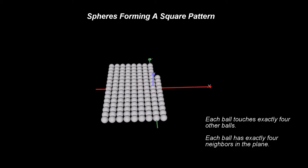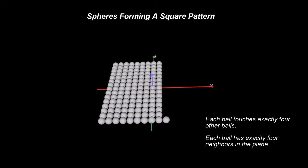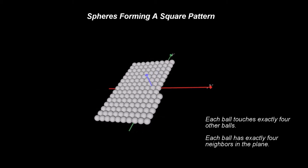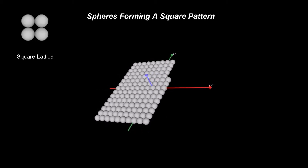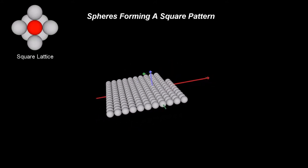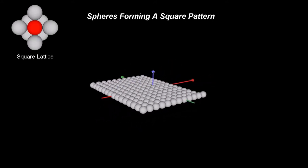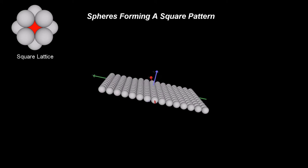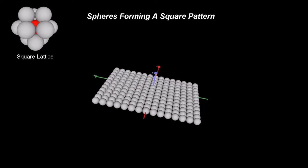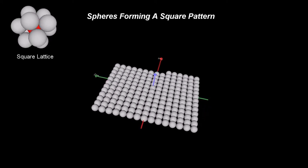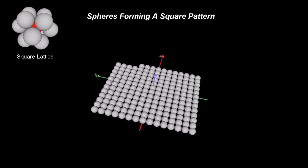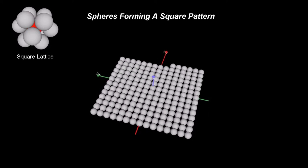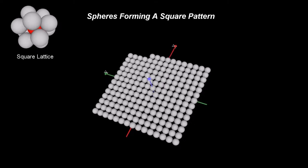At first impression, the ping pong balls arranged in a square pattern might not look like the best arrangement possible. Looking closer, one can see that a ball placed in a 4-ball nest on the second layer sinks deep into the cluster.